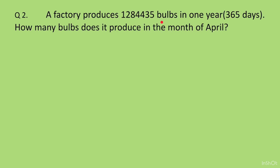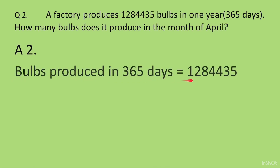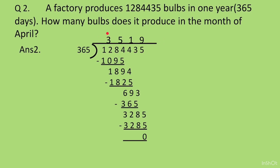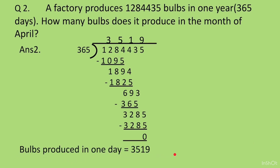Question 2 solution. A factory produces 1284435 bulbs in 1 year which is 365 days. How many bulbs does it produce in the month of April? First, bulbs produced in 365 days is equal to 1284435. Then we find bulbs produced in 1 day by dividing 1284435 by 365. Division gives us the answer as 3519. So bulbs produced in 1 day is equal to 3519.